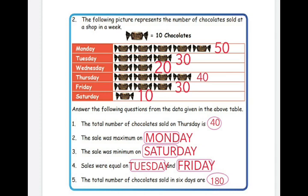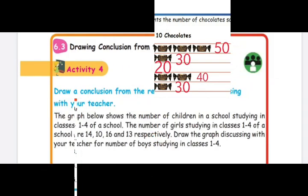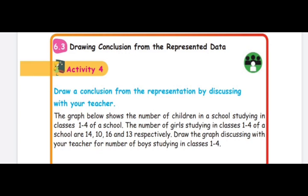Third question: the sale was minimum on which day? Ten is the least, and that is on Saturday — the answer is Saturday. Fourth question: sales were equal on which days? On Tuesday sales were 30 and on Friday also 30 — so the answer is Tuesday and Friday. Fifth question: total number of chocolates sold in six days. Fifty plus 30 plus 20 plus 40 plus 30 plus 10 gives a total of 180 chocolates.